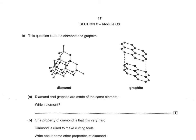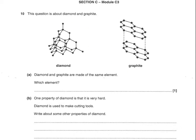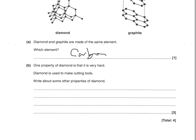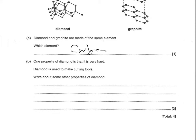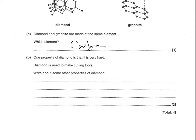Now on to the chemistry section, starting with different structures of carbon — diamond and graphite. Diamond and graphite are made of the same element: carbon. One property of diamond is that it's very hard and is used to make cutting tools. For other properties of diamond, there are three marks. You could say diamond has a high melting point, it's lustrous or shiny, it's colourless, it's insoluble in water, or it's clear and transparent. Any three of those six points gets you the three marks.